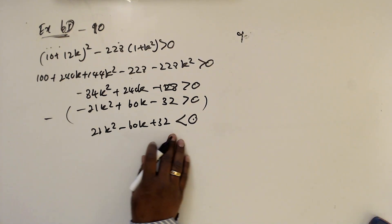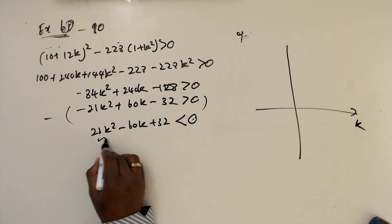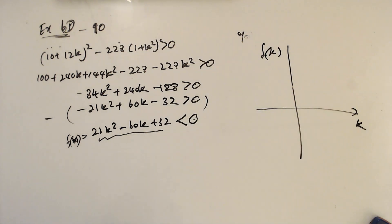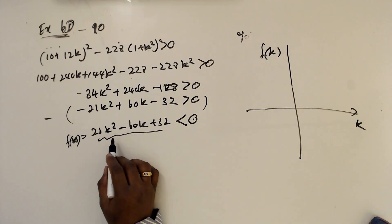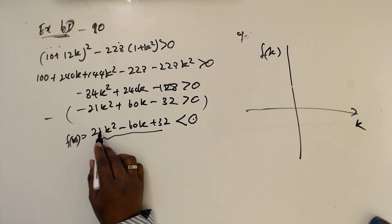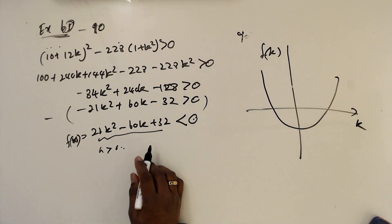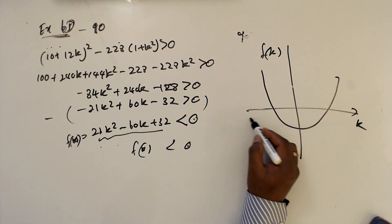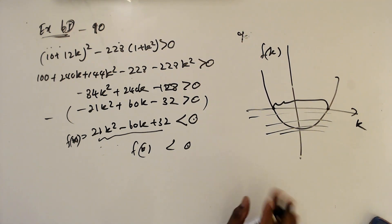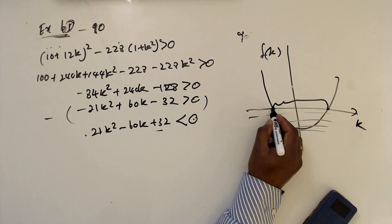Now we want to find the value of k. I will draw this as f(k) on the k-axis. Since a is greater than 0, the curve has a minimum, so I expect a U-shaped parabola. The f(k) negative area is the region between the two roots, which is where the inequality is satisfied.